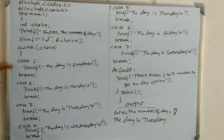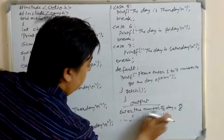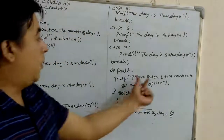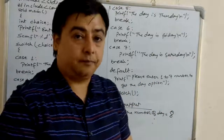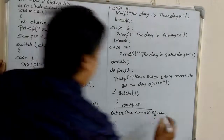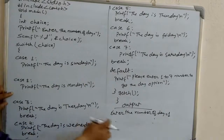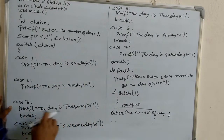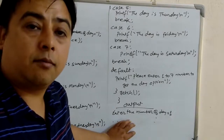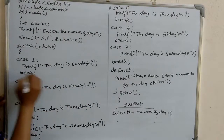If you enter 8, then no cases are matched, so it displays the default, and the result will be 'Please enter 1 to 7 numbers to get the day option.' But sometimes if you forget to write the break, and you enter day 1, then in the first line it displays 'The day is Sunday', in the second line 'The day is Monday', in the third line 'The day is Tuesday', and then it sees a break and comes out from the switch. So we should not forget to write break after the statement.